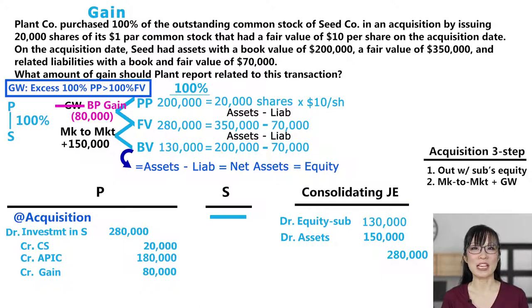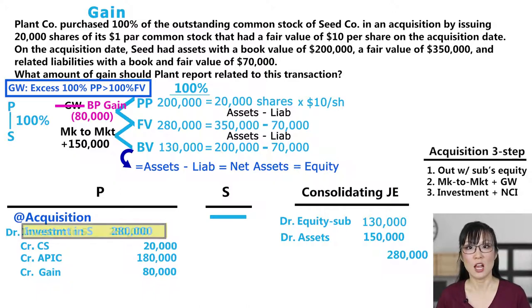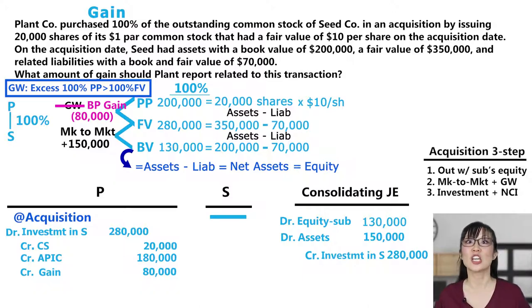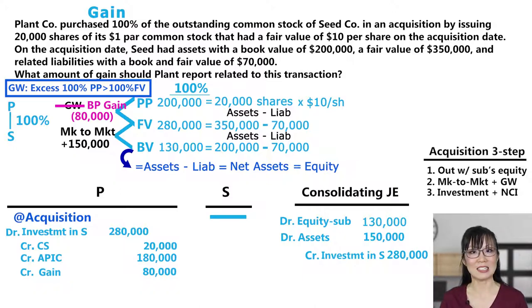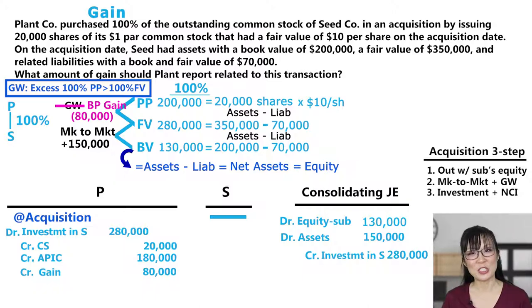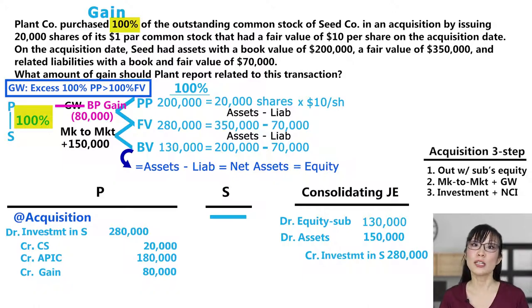Here's step three: get rid of the investment. The investment in Seed balance is $280,000. The investment is an asset, so to get rid of it, we credit it. Why? Remember, consolidating means we're adding Plant's cash and Seed's cash together to get total consolidated cash. The investment account represents Plant buying Seed — in essence, the fair value of all of Seed's assets and liabilities. If the investment account already includes Seed's assets and liabilities, and we're adding each of those onto the consolidated financial statements, Plant would be double counting — once in each line item and again in the investment account. So we get rid of the investment account to avoid double counting. And finally, there's no non-controlling interest here because Plant purchased 100% of Seed. Non-controlling interest only comes in when the parent buys less than 100%.